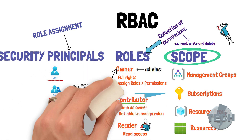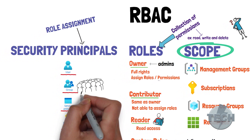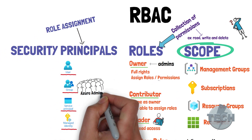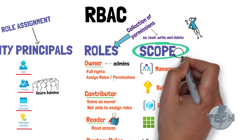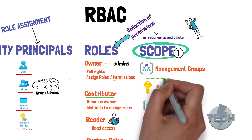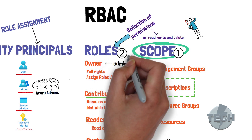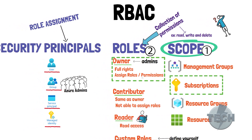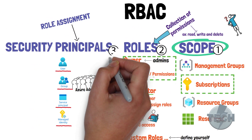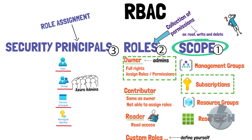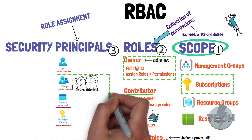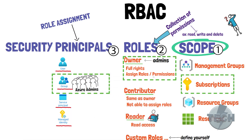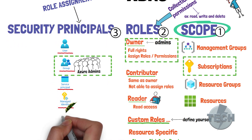This is how you can apply RBAC in Azure. Let's assume a group of Azure administrators need to manage their cloud environment. First, we decide on the scope — we will use the subscription as our scope. Then you have to think about which role they need. Since they are admins, we will give them owner rights. Third, who needs this access? Let's give it to a security group where all the admins are in. That's basically the principle of RBAC.